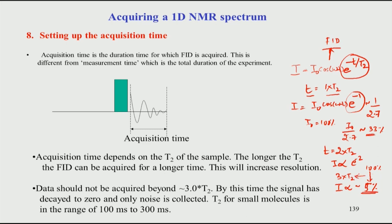By 3 times T2 the signal has reduced by 95 percent, and that is what we must keep in mind when setting the acquisition time — it has to be 3 times T2 and not more. If you give more than 3 times T2 the signal will be at 1 percent or less. The noise will start coming in because noise is always present from the electronics and hardware. So the FID is a combination of signal and noise, and if the signal has gone to zero, the noise never goes to zero.